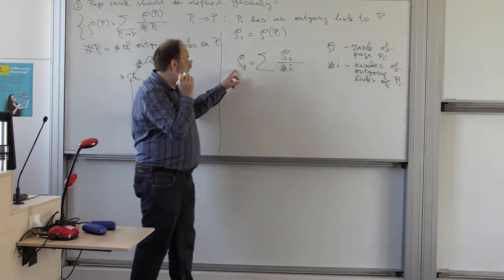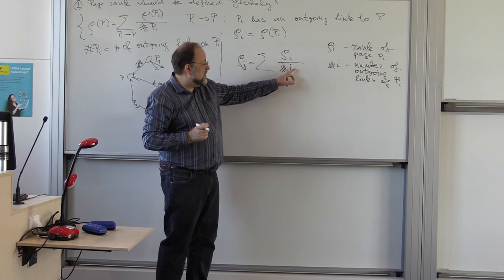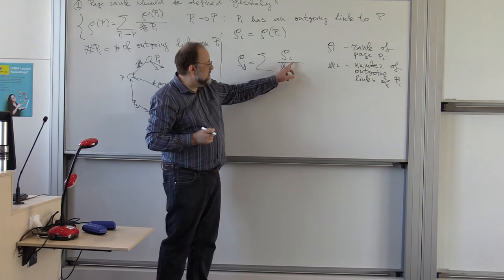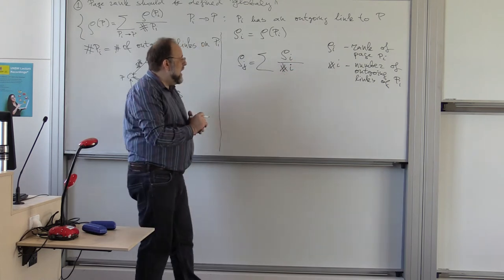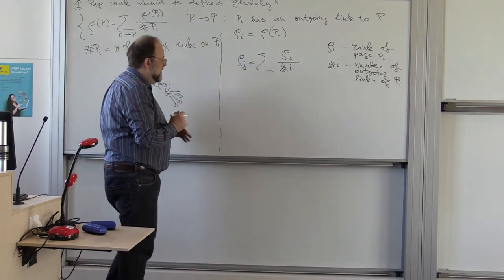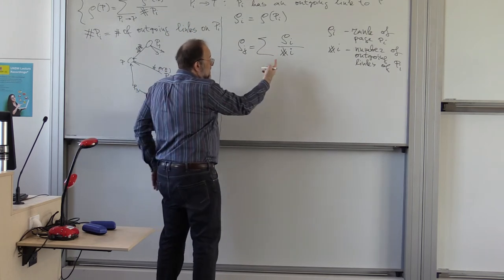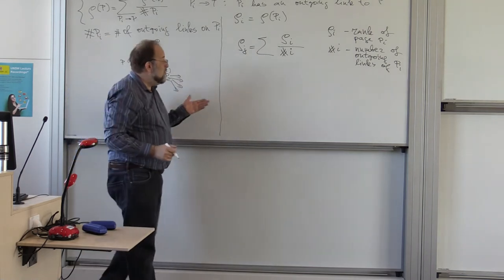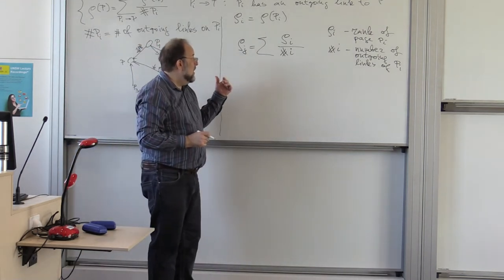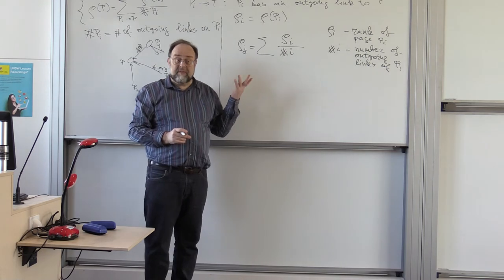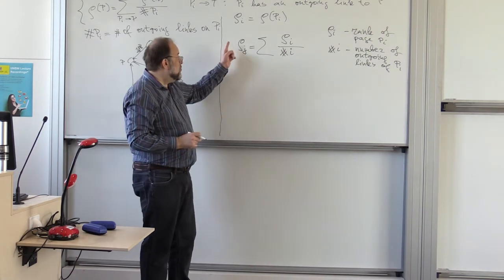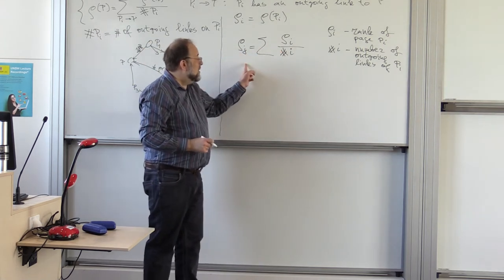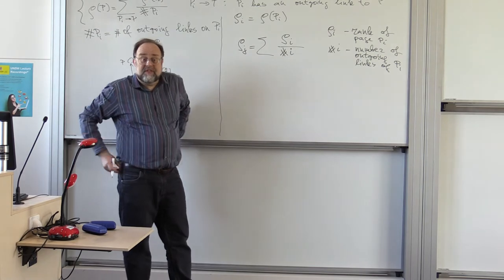And the sharp i is the number of outgoing links of pi. So, now, you can see, this is really a system of linear equations, because this is just constant. There are numbers, how many outgoing links page pi has. And so, this is just a system of linear equations. And we now want to figure out, does this system actually have a solution? Is there a solution, are there values for all the rho i's that make all of the equations true?